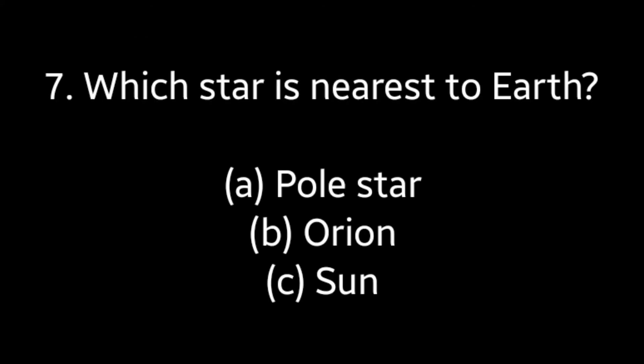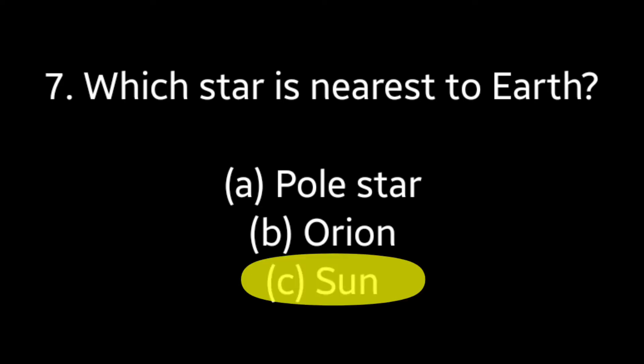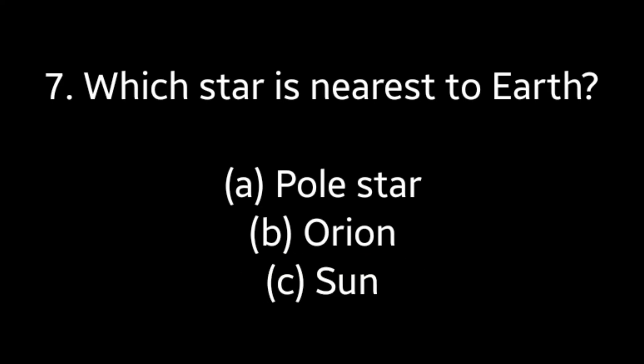Question number 7: Which star is nearest to Earth? Options: Pole star, Orion, Sun. Answer is option C — Sun.